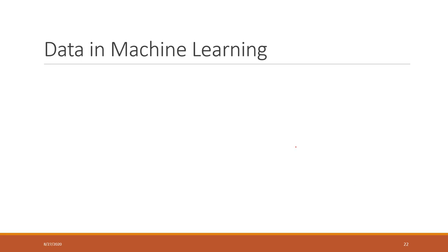Let's talk about data in machine learning. Machine learning can only take structured data. If you remember from IS340, there are several different types of data resources: structured data, data in the relational database, semi-structured like MongoDB, and also unstructured like text data. Most machine learning models require that you convert data into a structured data format.